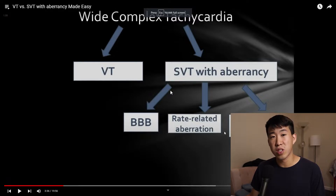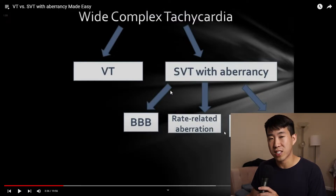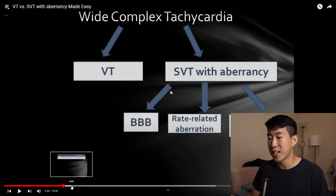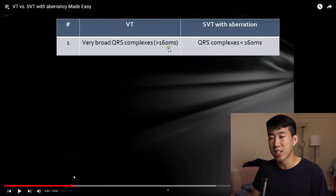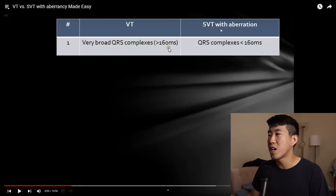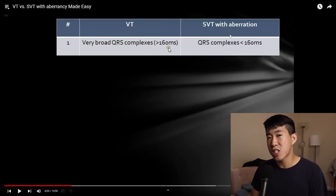There are some great resources that list criteria suggesting VT. For ventricular tachycardia, you're typically going to see very broad QRS complexes greater than 160 milliseconds, whereas with SVT with aberration, QRS complexes are typically less than 140 milliseconds.